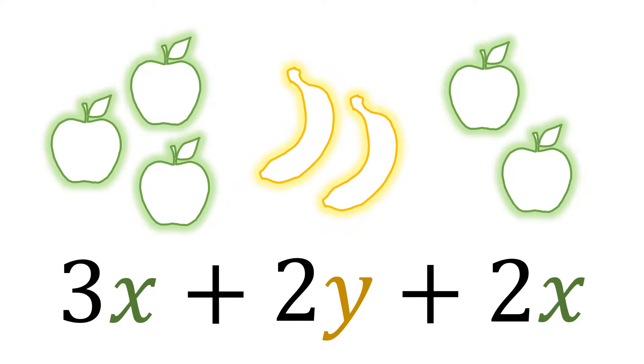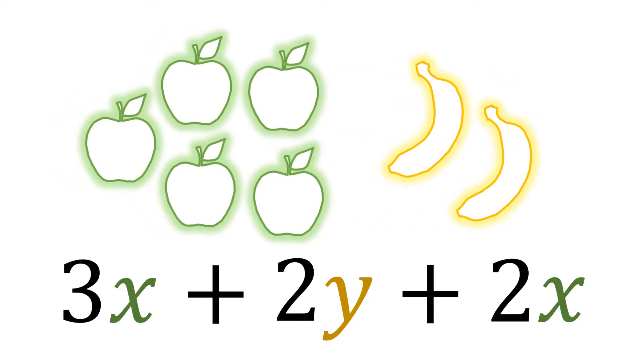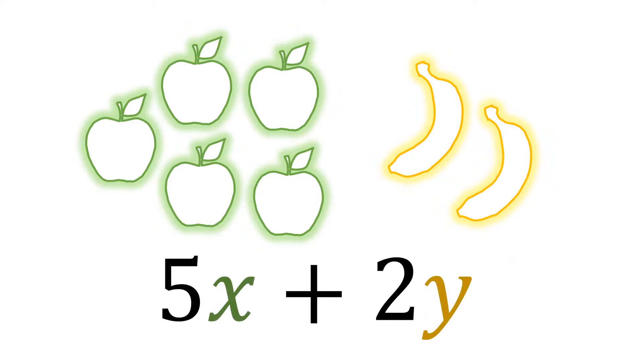But if we look at it, we can rearrange the apples and bananas like this. So therefore, we can say that we have 5x plus 2y.